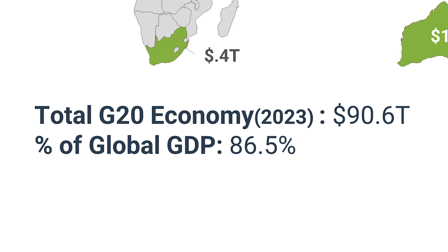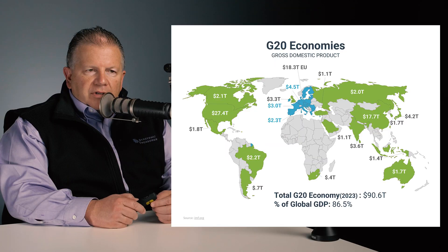In total, the G20 is just over $90 trillion. So out of $104 trillion in global GDP, $90 trillion is made up by these economies — 86.5% of global GDP, according to IMF numbers. This concludes the Global GDP Look. Thanks for watching.